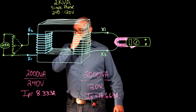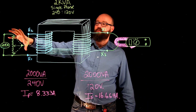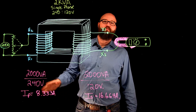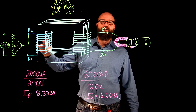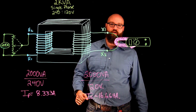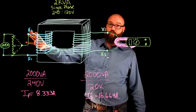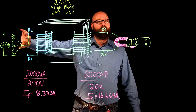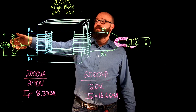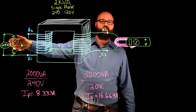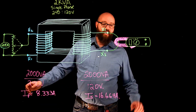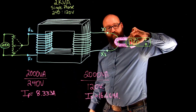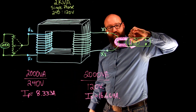At this point we would energize our power supply. It's very important when performing a short circuit test that you set your voltage supply to zero first — otherwise you will end up with that massive short circuit current. So make sure you're not applying rated voltage under short circuit conditions. We start at zero; if we're using a variac we crank it all the way down to zero, energize, and slowly start to dial it up, monitoring the ammeter. What we're looking for is 16.67 amps.